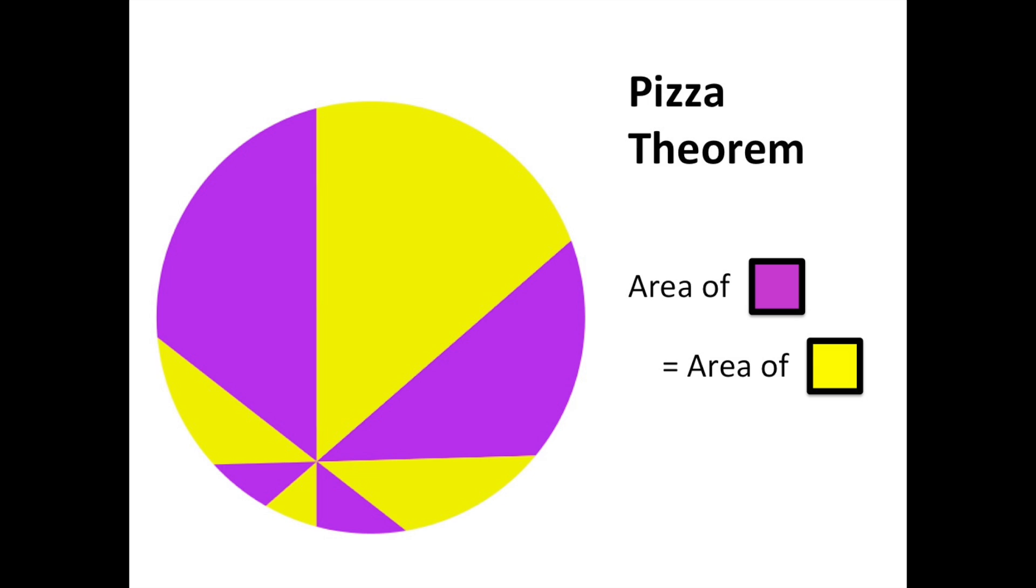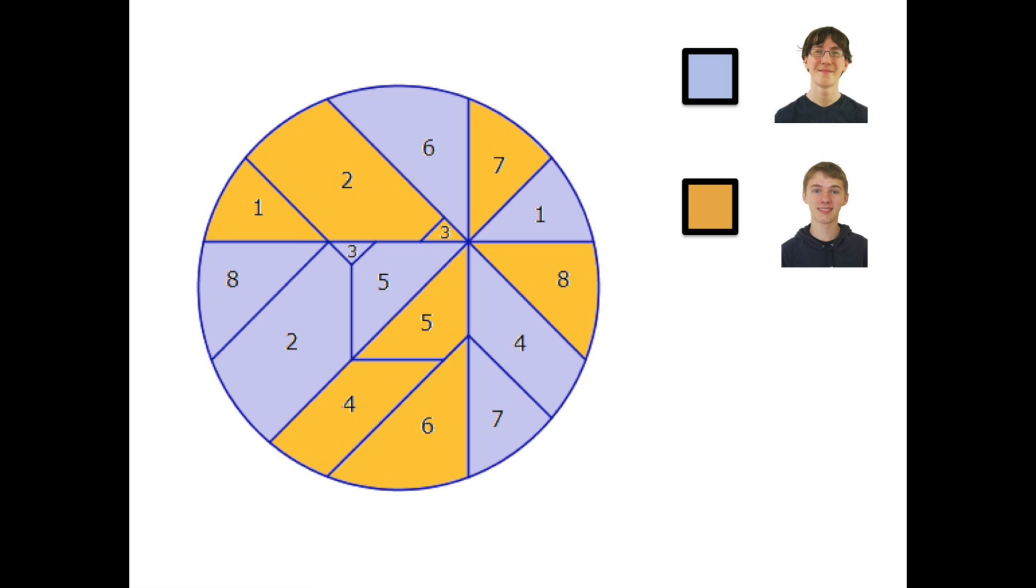One can use calculus to prove the pizza theorem, but for an easier way, look at this picture. The pizza has been further divided into many regions, each containing a number. Each number appears in two congruent regions, once in violet and once in orange. This implies that the orange area equals the violet area, so each person gets the same amount of pizza. This proof-by-picture works no matter where the center is placed.